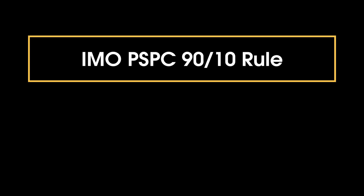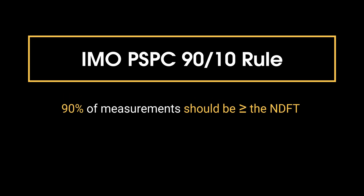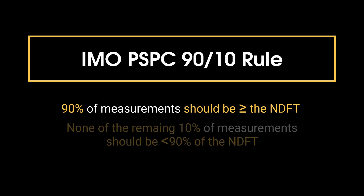The 9010 rule requires that 90% of all thickness measurements should be greater than or equal to the NDFT, or nominal dry film thickness, and none of the remaining 10% of measurements should be below 90% NDFT.